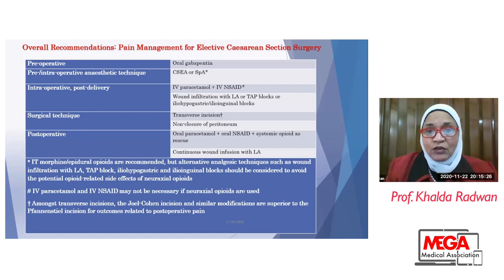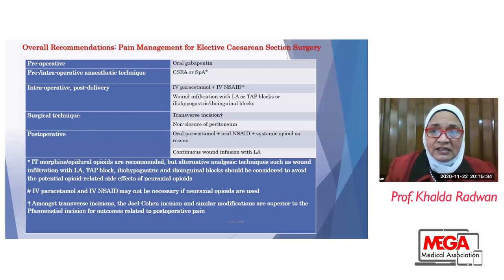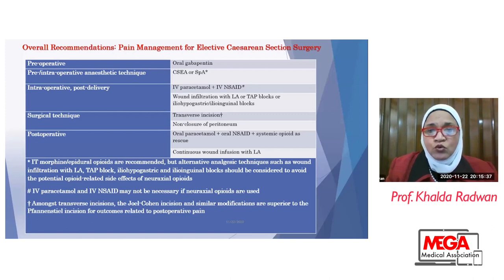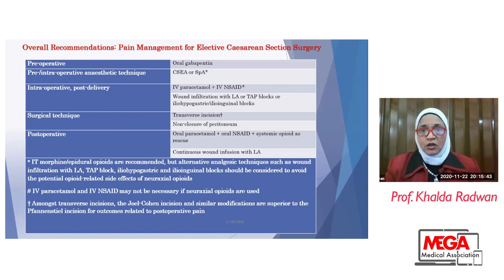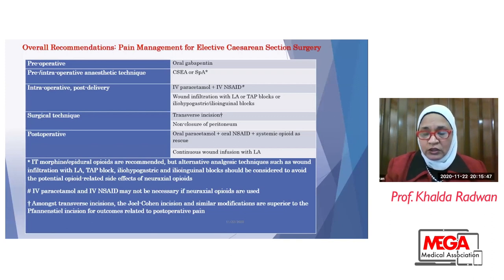Surgical technique matters — a transverse incision or non-closure of the peritoneum will decrease the risk of pain and its intensity. Postoperatively, oral paracetamol and NSAIDs can be used. Systemic opioids can be used as rescue medication. Continuous wound infusion with local anesthetics can also be used to decrease pain.